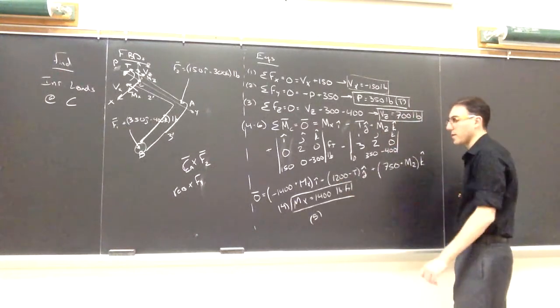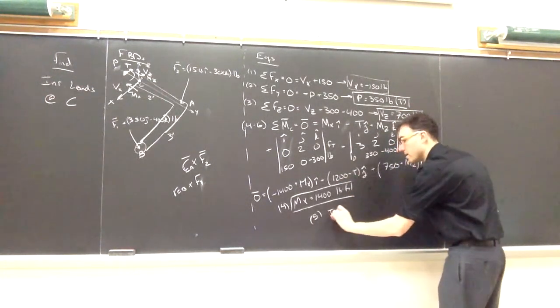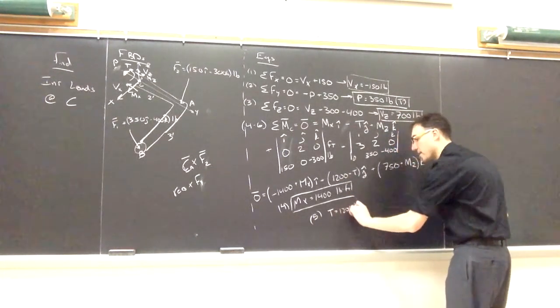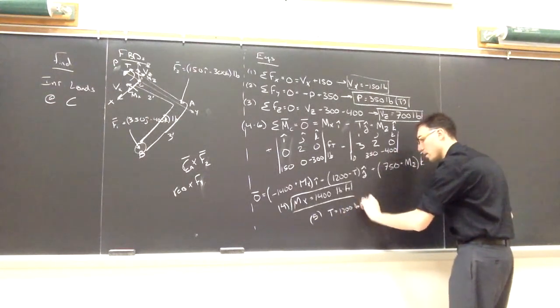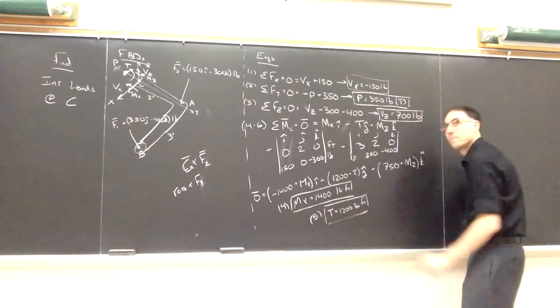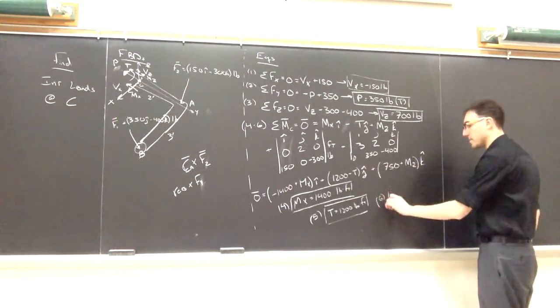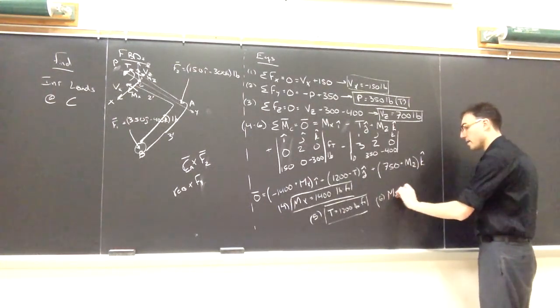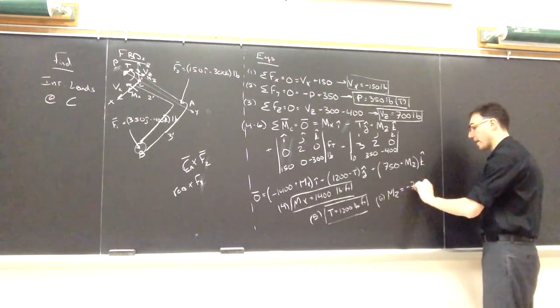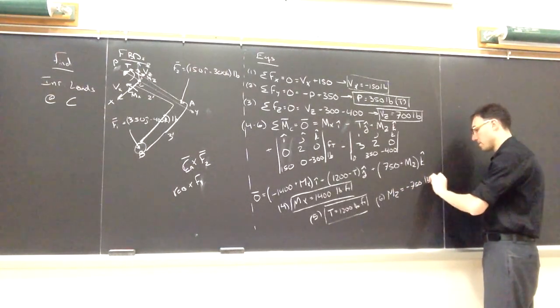Setting zero equals 1200 minus T, T must be 1200 pound-feet. And finally, zero equals 750 plus MZ. So MZ must equal negative 750 pound-feet.